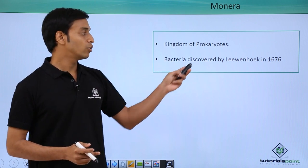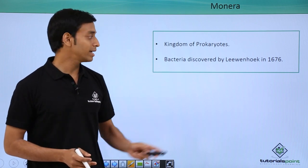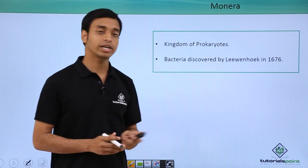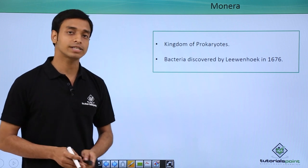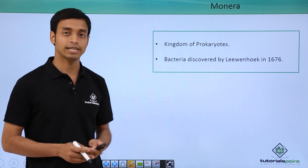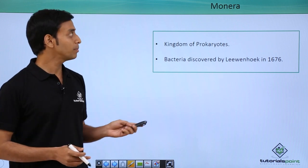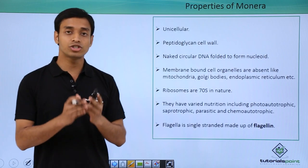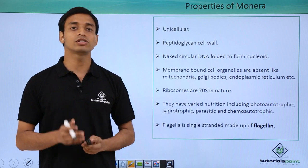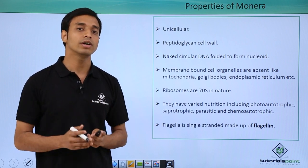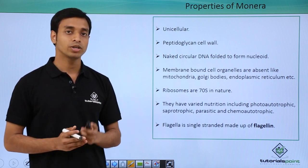Bacteria were discovered by the famous scientist Leeuwenhoek in the year 1676. Now let us talk about some of the general properties of the kingdom Monera, that is, the general properties of bacteria.